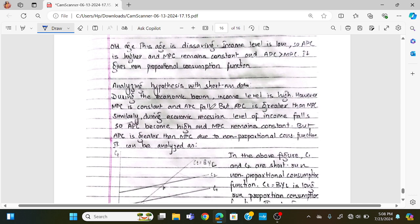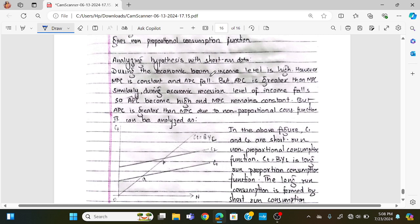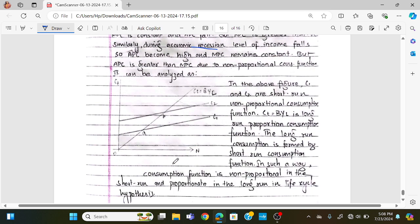Analyzing the hypothesis with short-run data: if there is a boom, income level is high and APC is less than MPC. During economic recession, individual income is low and APC is greater than MPC.